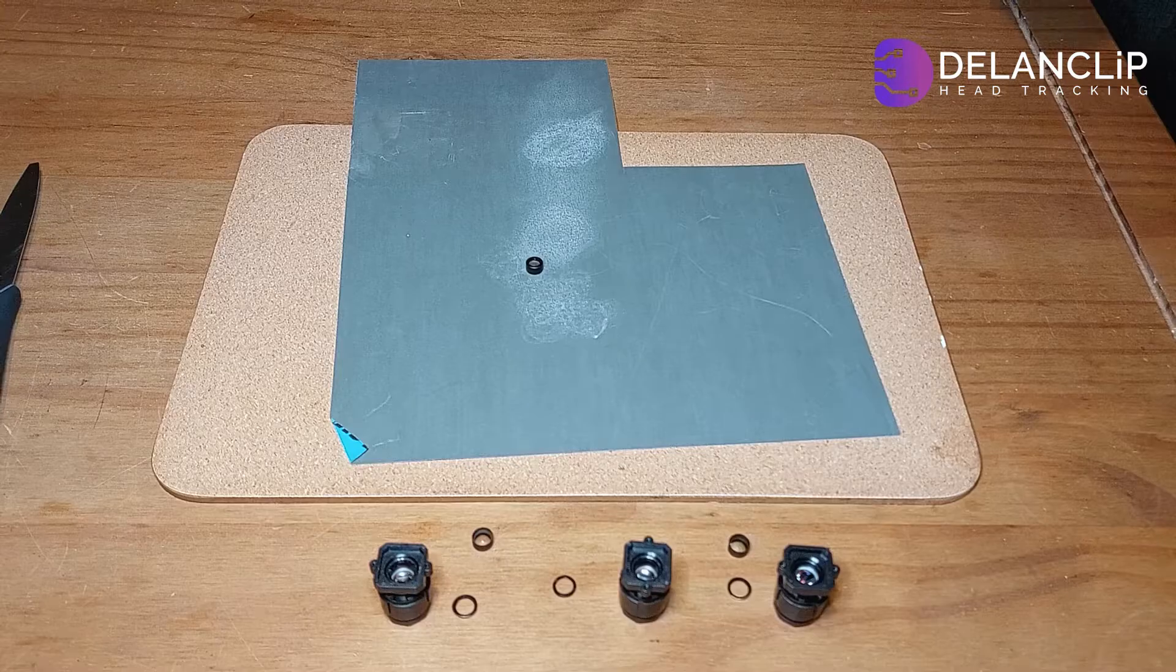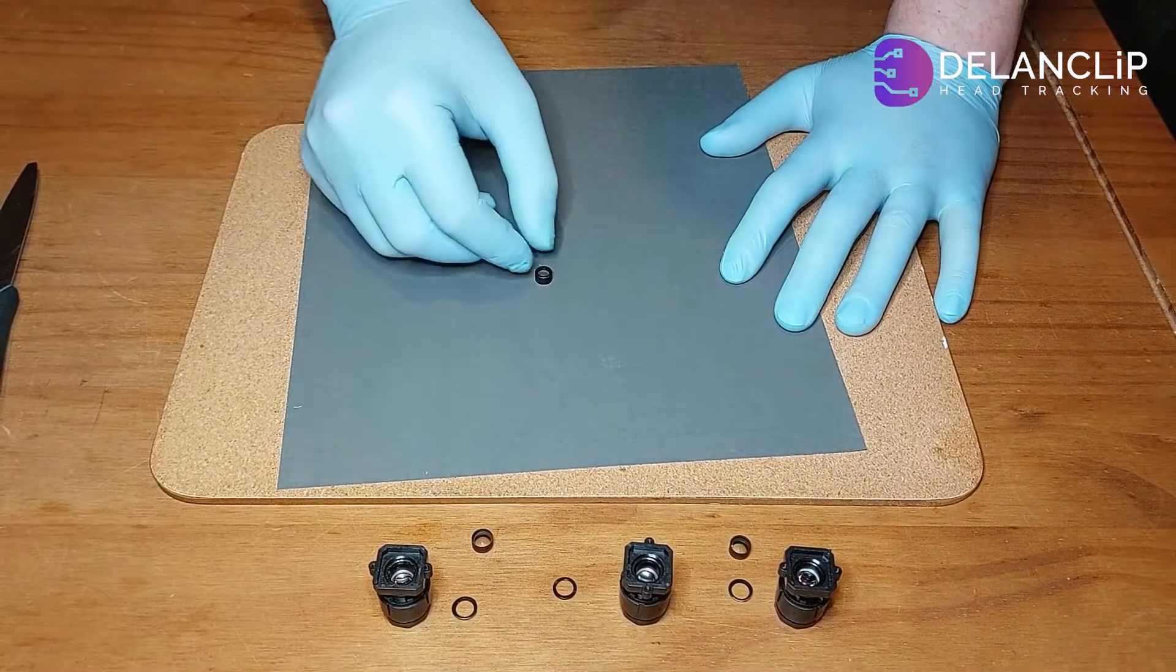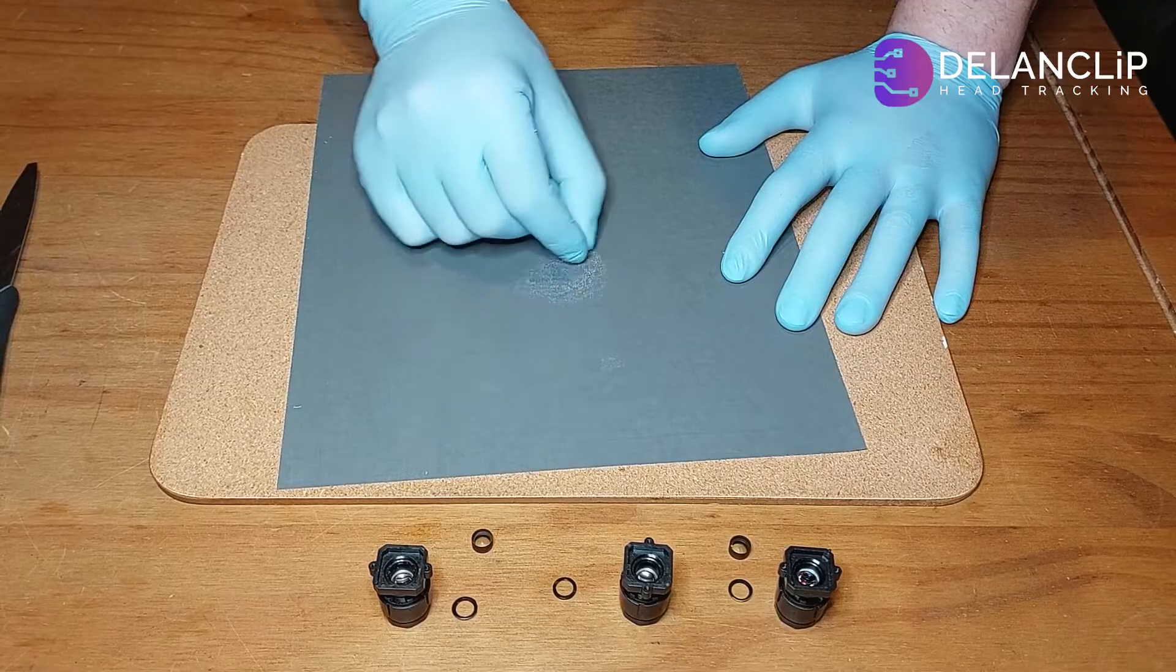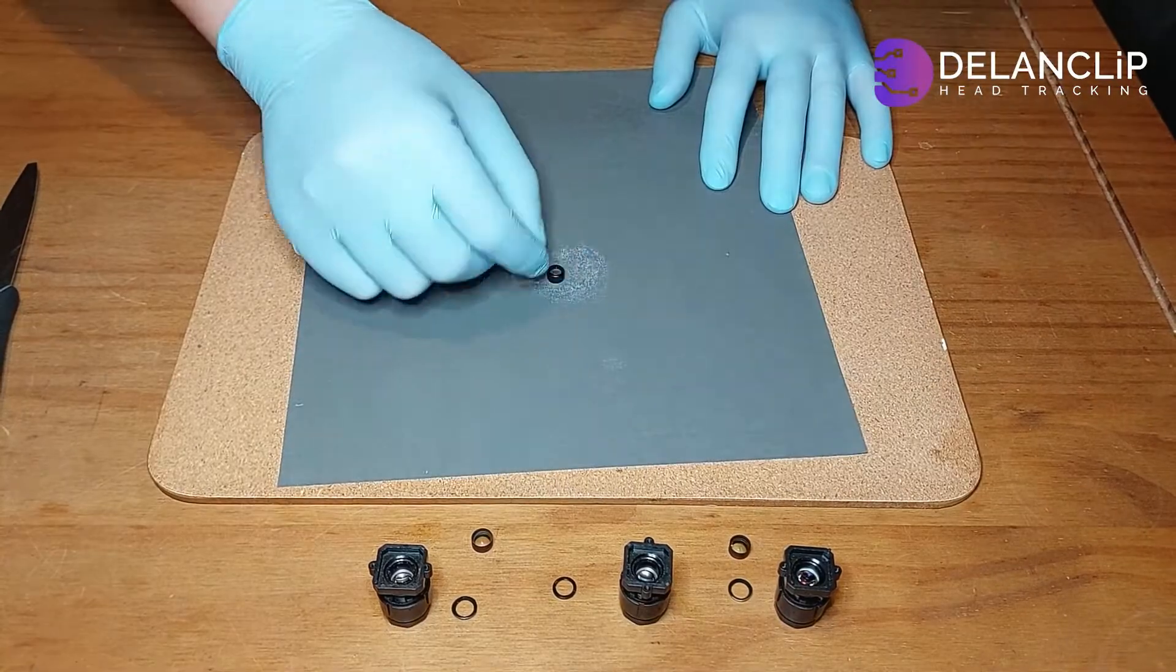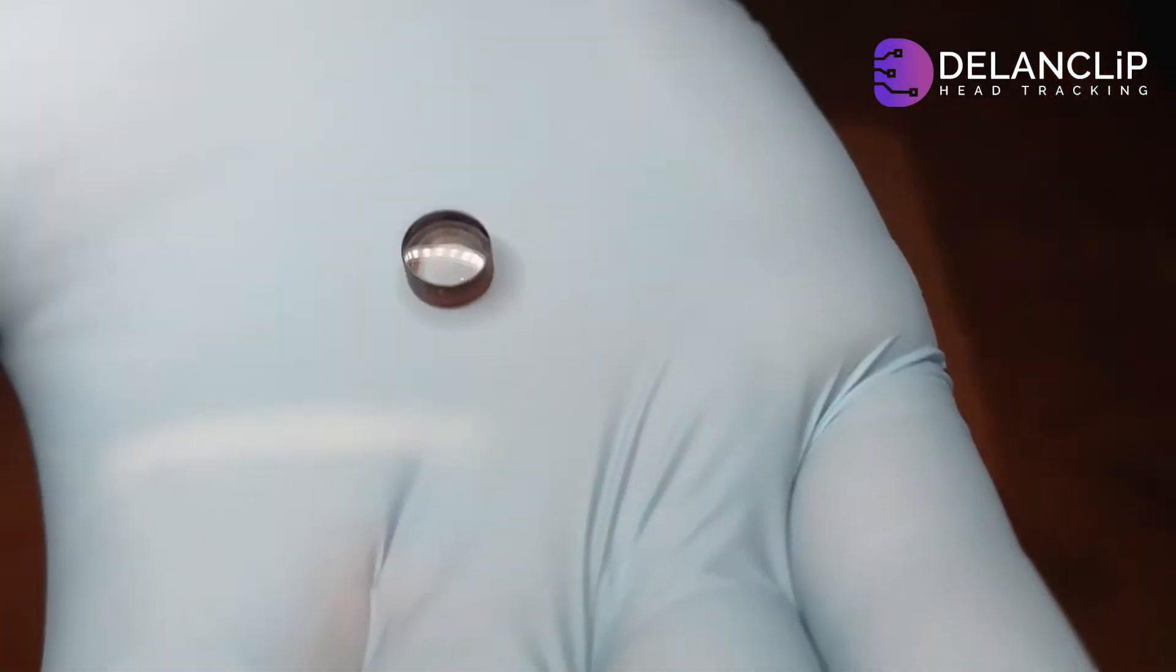Finally, move to 2500 grit sandpaper for a smooth, clear finish. If you notice any deep scratches or uneven spots, stop and reassess your technique. Remember, patience is key in this process.